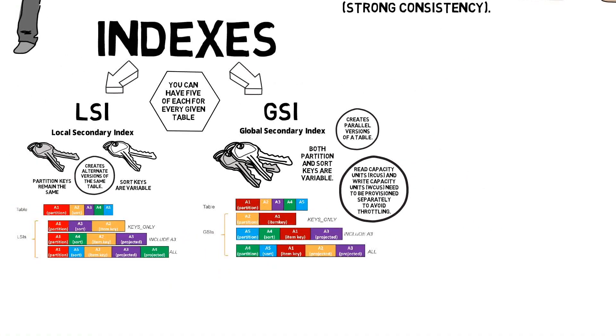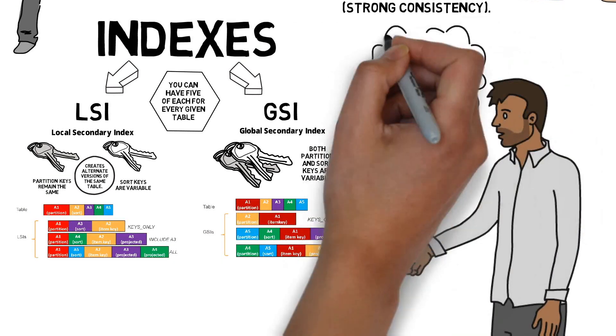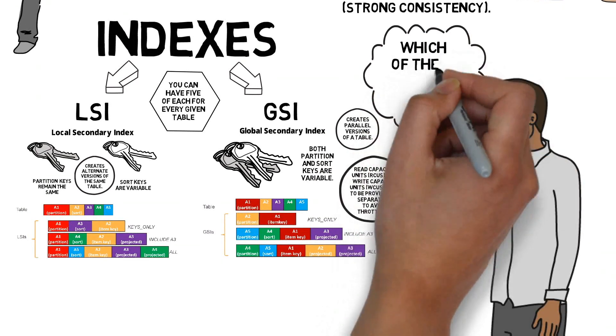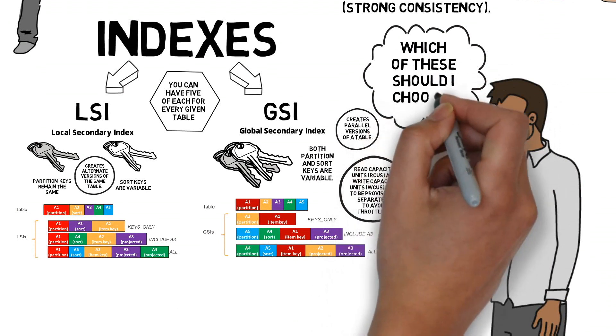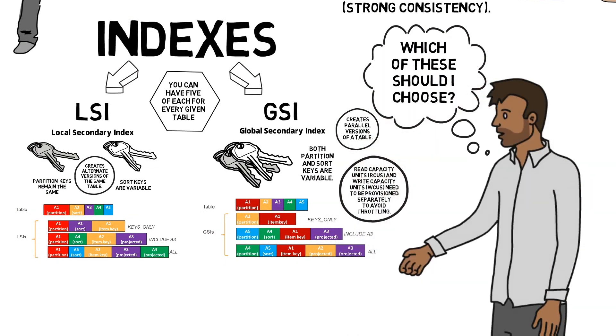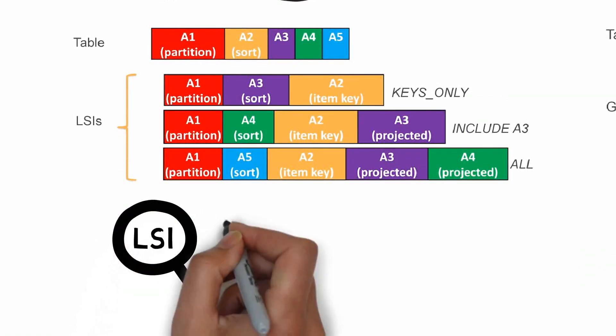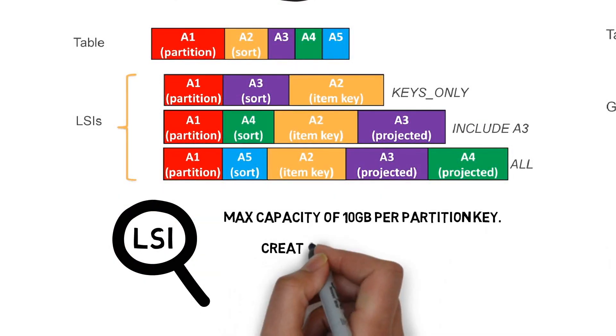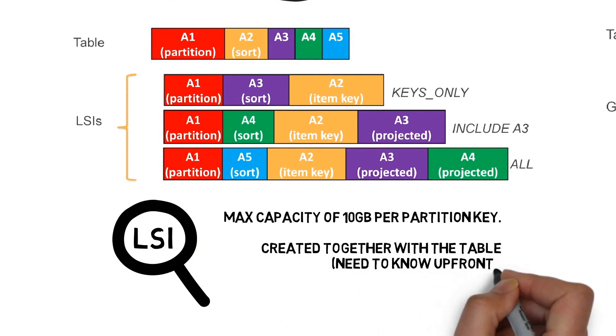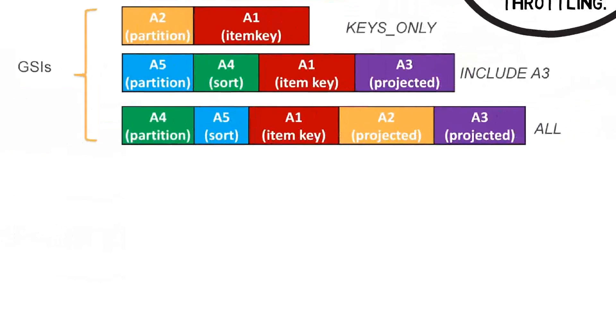So which one of these should I choose? We use local secondary index when we want a max capacity of 10 gigabytes per partition key. This is created together with the table. We need to know this up front for highest consistency.